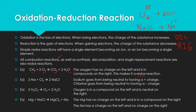Single replacement reactions are also always redox reactions. For example, magnesium is all by itself — no charge — and then becomes part of a compound with a 2+ charge, so its charge goes from neutral to 2+. That's oxidation — loss of electrons. Sodium starts in a compound with a positive charge and ends up by itself with no charge — its charge goes down, so it's been reduced. There's an exchange of electrons occurring, making it a redox reaction.